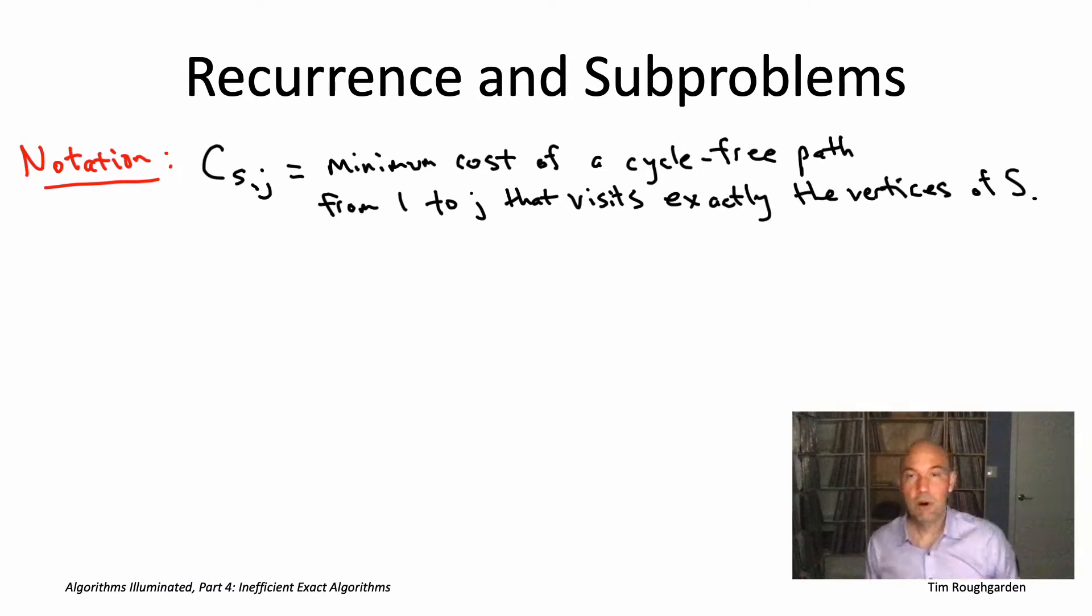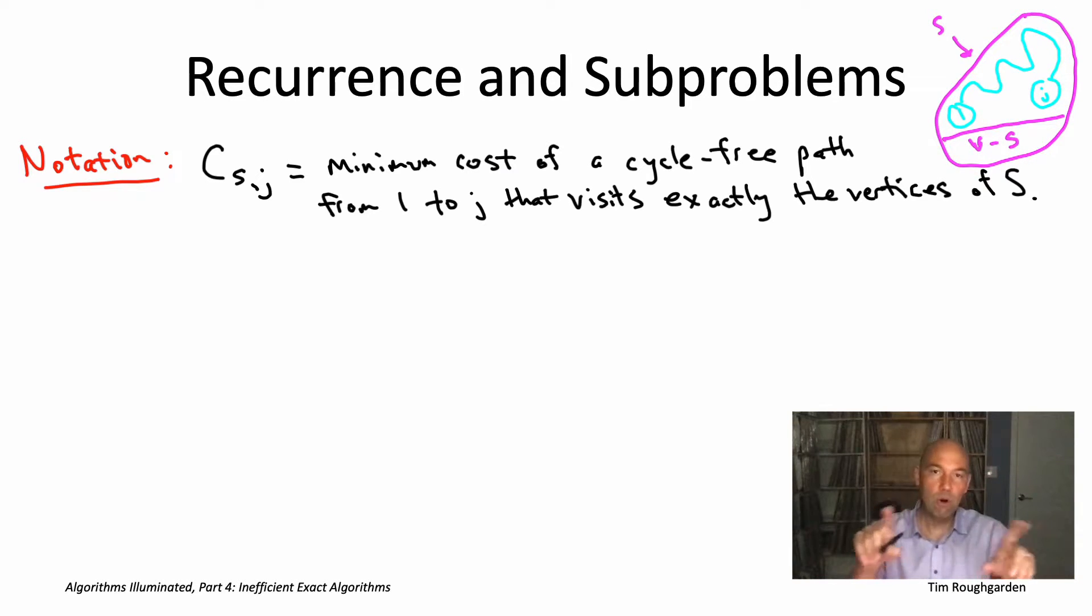For example, in this cartoon on the upper right part of the slide, imagine that the outer magenta circle is the set of all of the vertices, and then the top set is S, and then the bottom is the other vertices V minus S, and this light blue path is meant to indicate that this path is visiting each vertex of S exactly once. So we want to know the minimum cost of any path that looks like that.